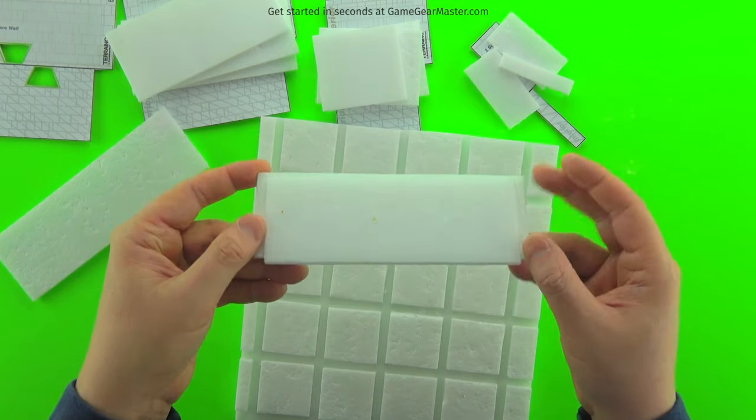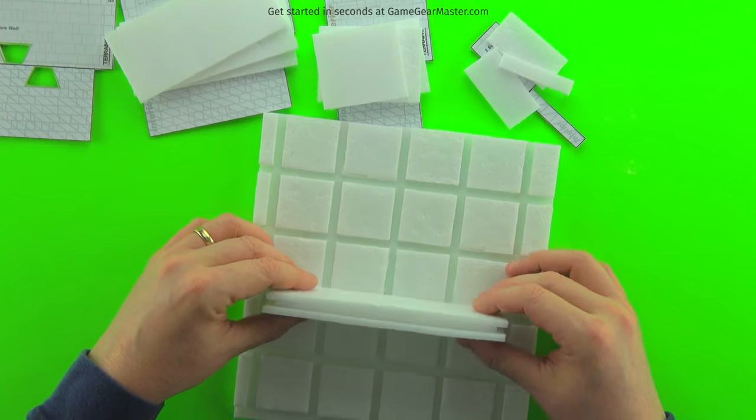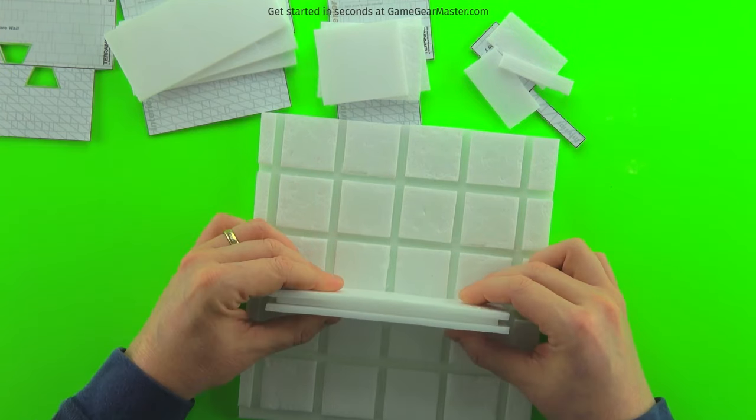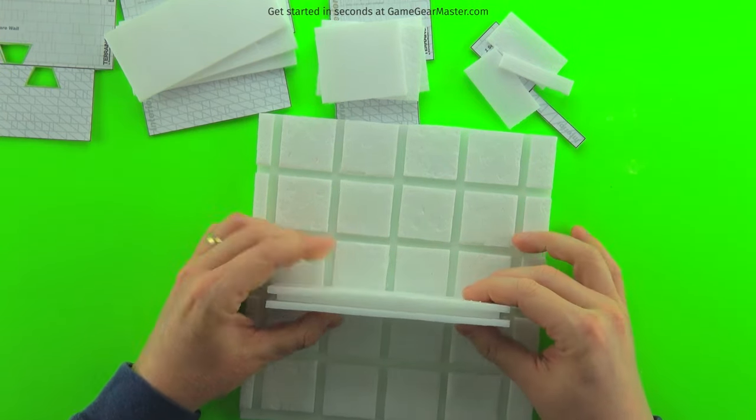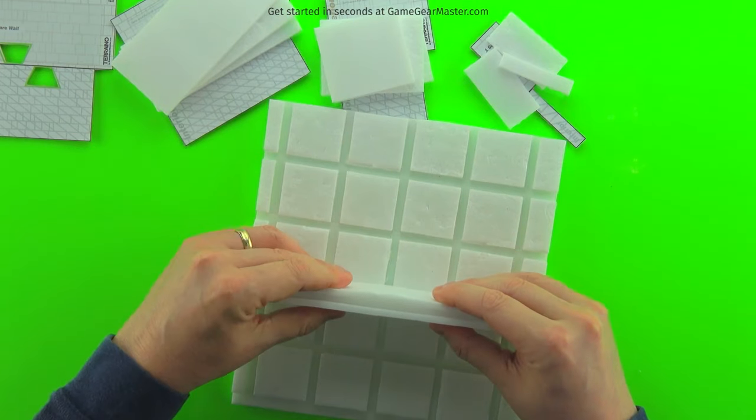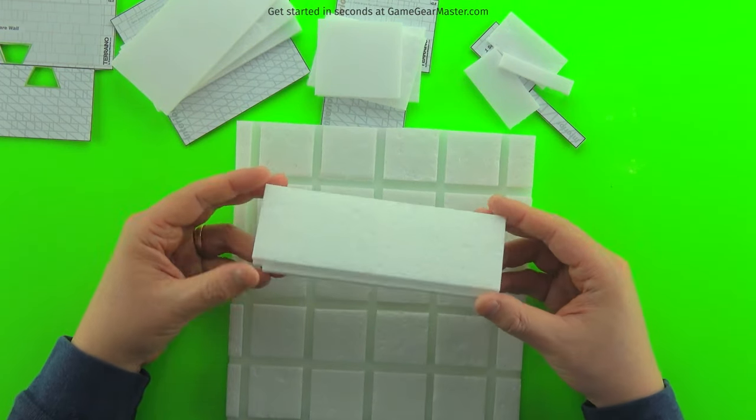And you notice there's not a whole lot of hot glue on there. The thing with foam and hot glue is if you put a lot of hot glue on, it'll start bubbling up the foam. So if you see that your walls are starting to bulge out after you put them together, that means you're putting up way too much hot glue.